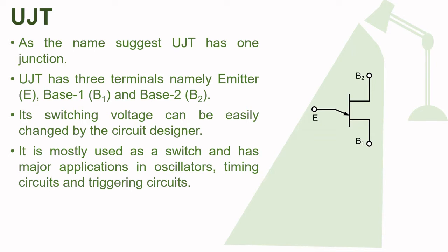As the name suggests, the UJT has only one junction, i.e. unijunction. UJT has three terminals namely: emitter, which is shown here, then base terminal 1, shown here, and base terminal 2, which is shown here. UJT is mainly used for switching purposes. Its switching voltage can be easily changed by changing the external circuit parameters connected to the UJT. The main application of UJT is in oscillators, timing circuits, and triggering circuits.